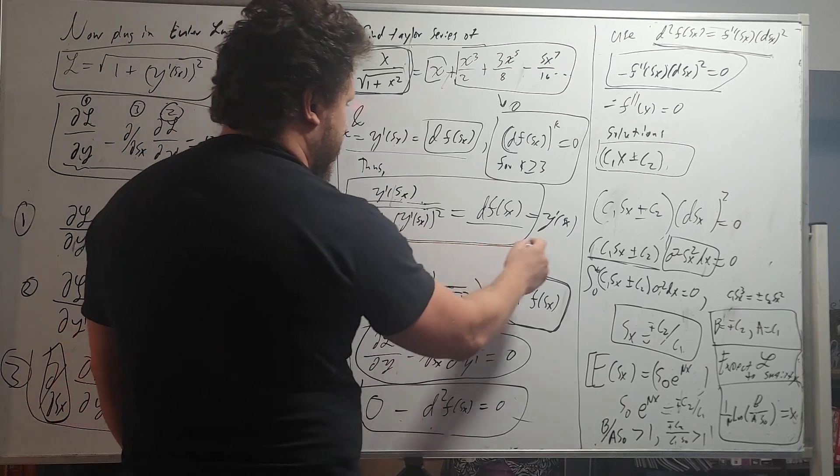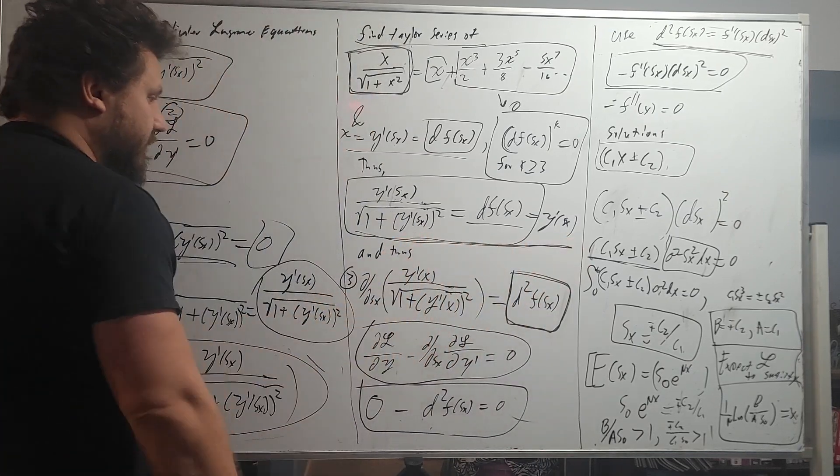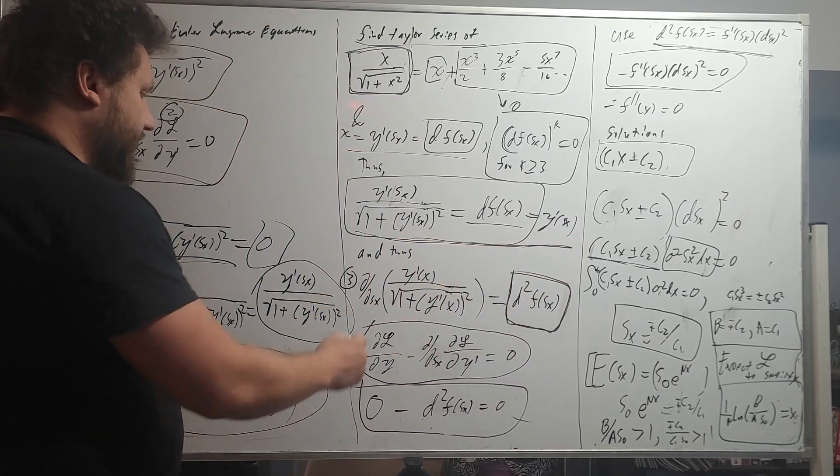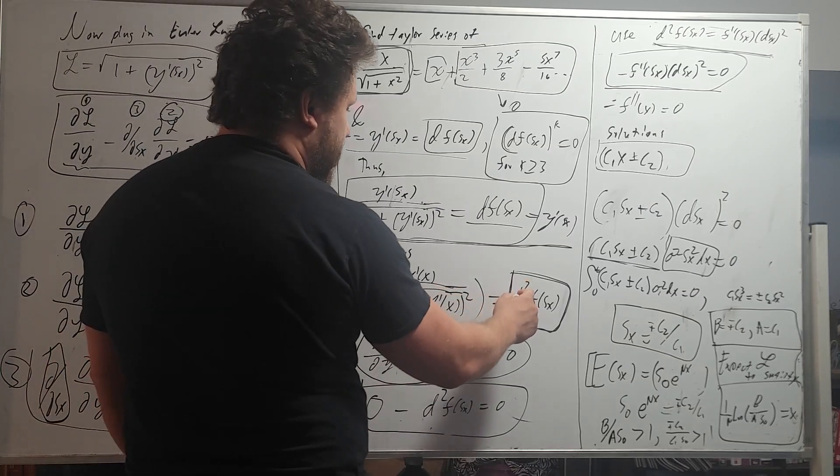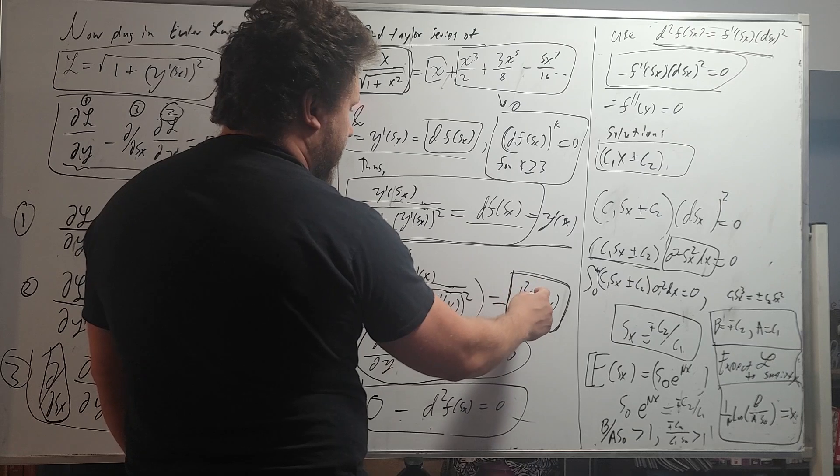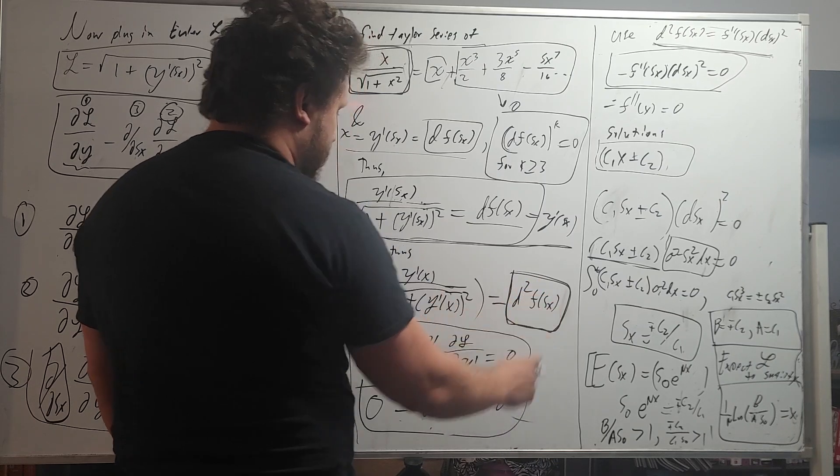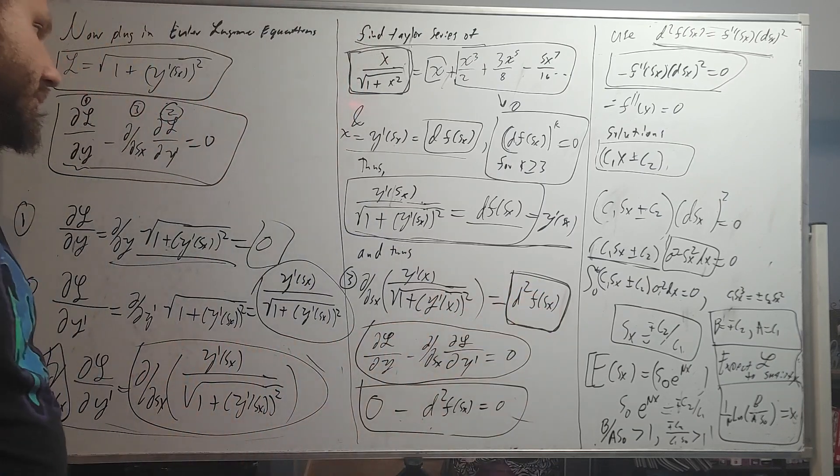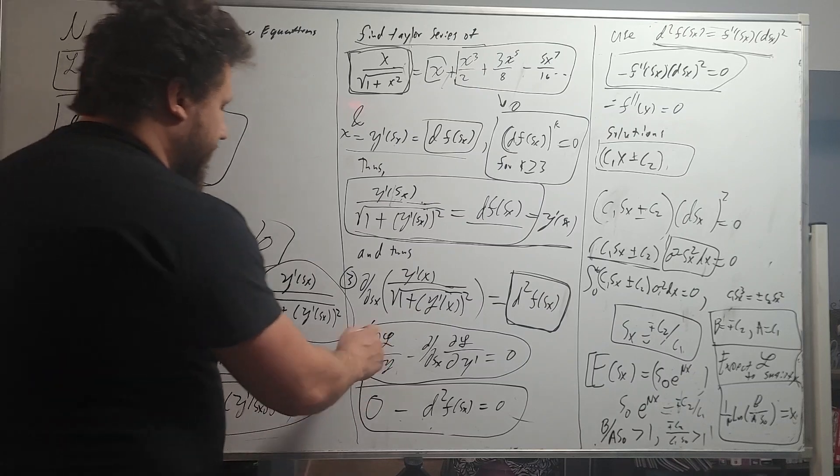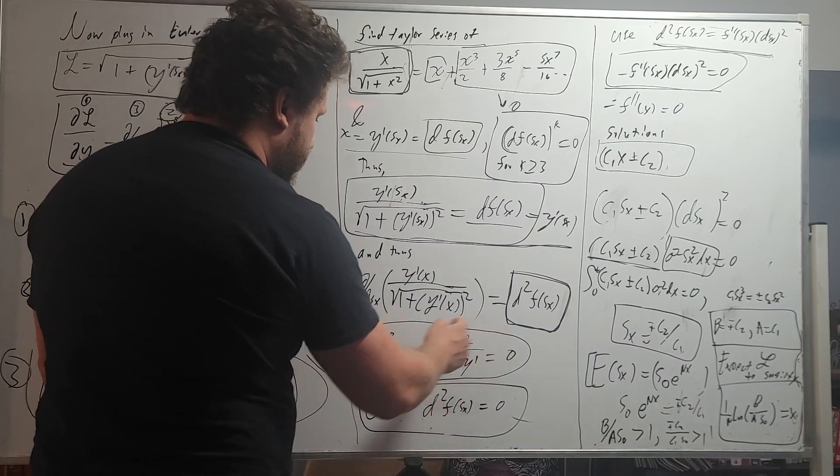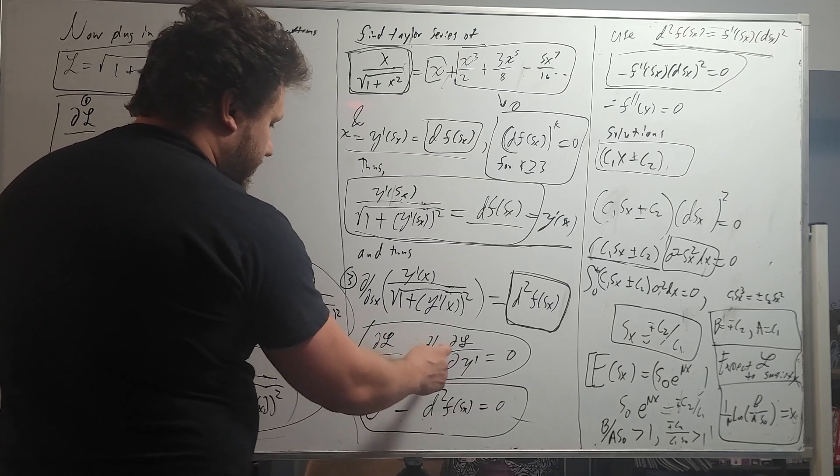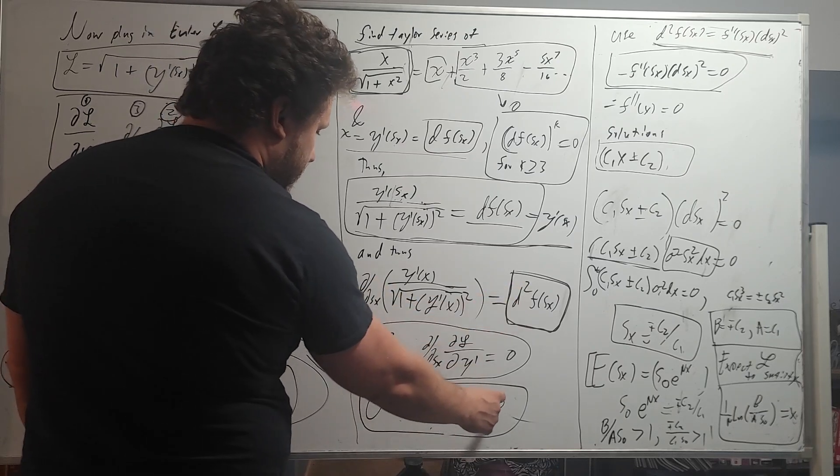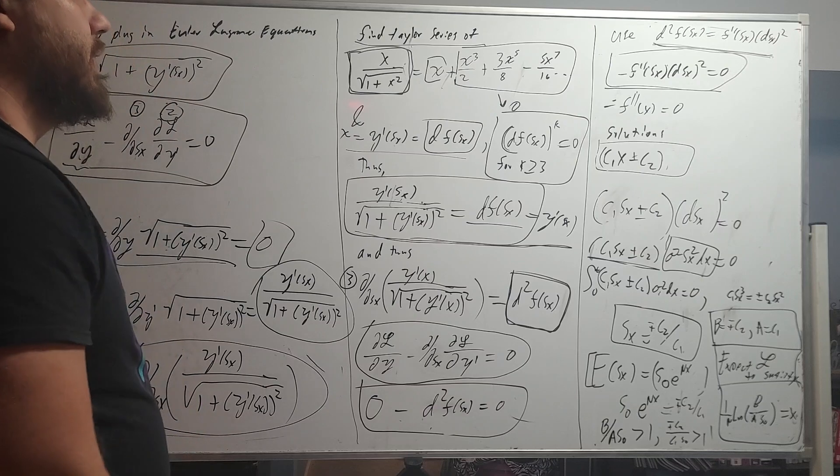Now I did tell you that df sx to the k, where k is greater than or equal to 3, is 0. So all these terms go to 0. This x is going to be subject to the y prime sx, and that just makes this here. All we need to do is take the stochastic derivative with respect to this, which is just d squared f of the stochastic process. Here is the Euler-Lagrange equation. This is 0, and this we found is this right here, and this equals 0.